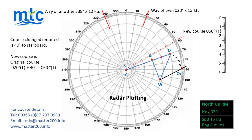The proposed change of course is 40 degrees to starboard. The new course line is therefore 020 degrees true plus 40 degrees, giving the new course of 060 degrees true. From the centre C, draw the new course line at 060 degrees true, and then transfer the new course line 060 degrees through W.